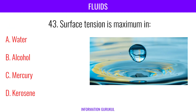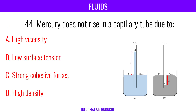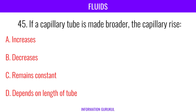Surface tension is maximum in mercury. Mercury does not rise in a capillary tube due to strong cohesive forces. If a capillary tube is made broader, the capillary rise decreases.